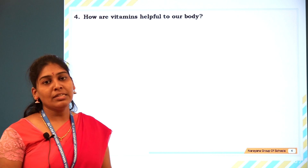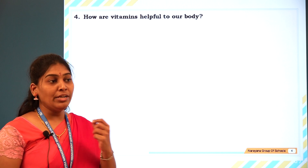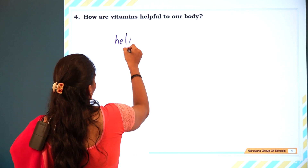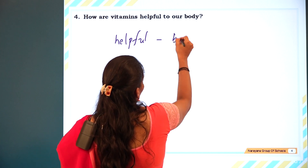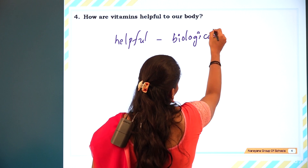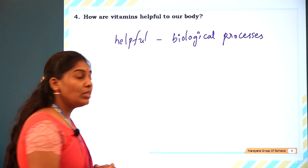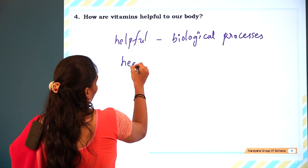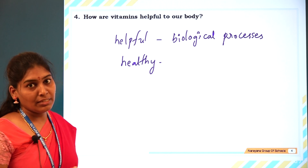How are vitamins helpful to our body? Vitamins are micronutrients. Though they are micronutrients, they are very helpful for undergoing many processes in our body. They are helpful for all the biological processes in the body and help us remain healthy. Because of vitamins, we don't get many diseases. Thank you.